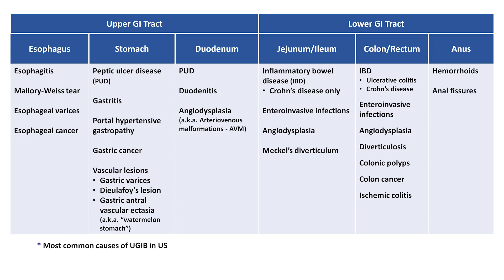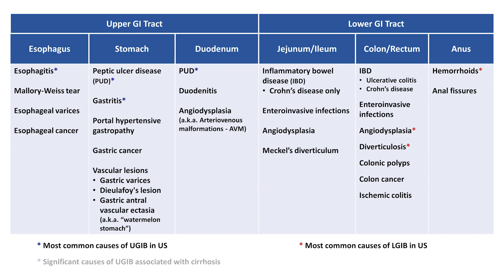The most common causes of upper GI bleeding in the US are esophagitis, peptic ulcer disease, and gastritis. The most common causes of lower GI bleeding in the US are angiodysplasia of the colon, diverticulosis, and hemorrhoids. One last significant group of etiologies are those associated with cirrhosis and portal hypertension — this includes esophageal and gastric varices, portal hypertensive gastropathy, and gastric antrovascular ectasias.